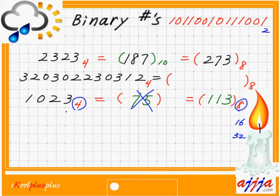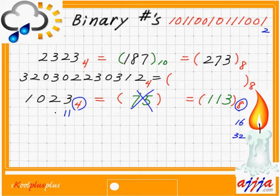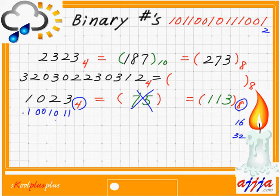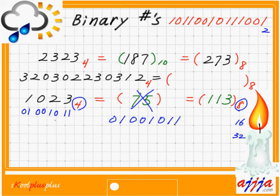Simply put, 3 in base 4 means binary 1, 1. Each base-4 digit uses 2 binary digits. For digit value 2: that's binary 1, 0 (2 is alive, 1 is dead). For digit 0: that's binary 0, 0. For digit 1: first digit is 1, second digit is 0. So we can rewrite 1, 0, 2, 3 in base 4 as binary: 0, 1, 0, 0, 1, 0, 1, 1.